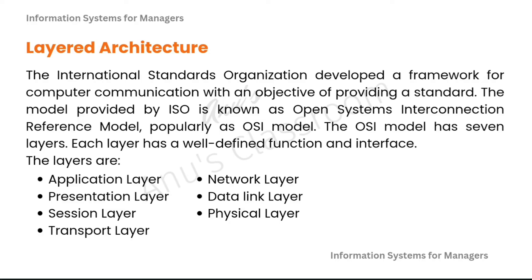The International Standards Organization or ISO had developed a framework for computer communication with an objective of providing a standard. This model provided by ISO was known as the Open System Interconnection reference model, popularly shortened as the OSI model. This OSI model has seven layers and therefore it is a layered architecture. Each layer has a well defined function and interface. The seven layers are: application layer, presentation layer, session layer, transport layer, network layer, data link layer, and the physical layer.